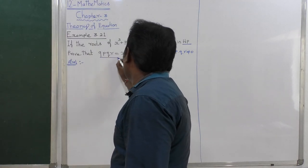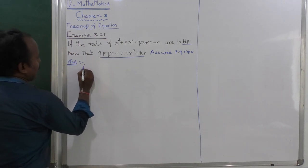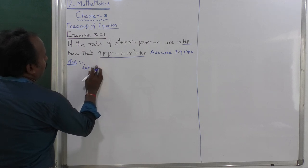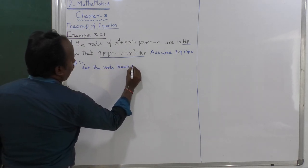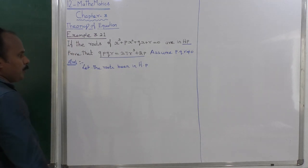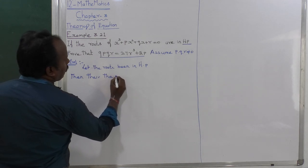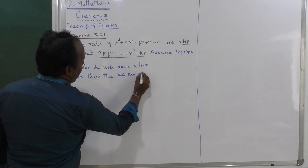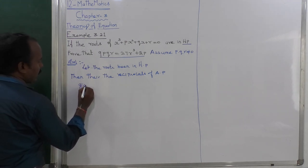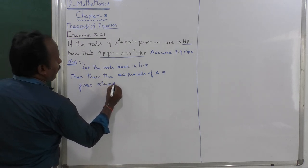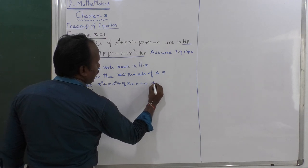The answer shown first is wrong, so we get the correct answer as follows. Let the roots be in HP. Then the reciprocal of the roots will be in AP. So the given equation is x³ + px² + qx + r = 0, and the reciprocal of this will convert the HP form to AP form.